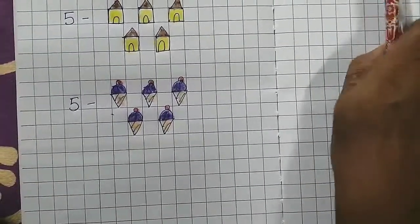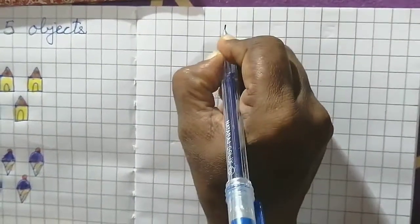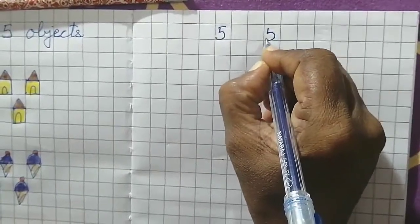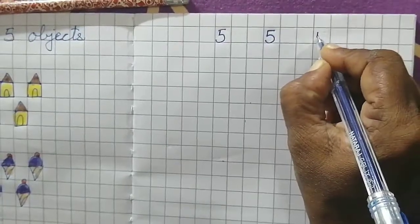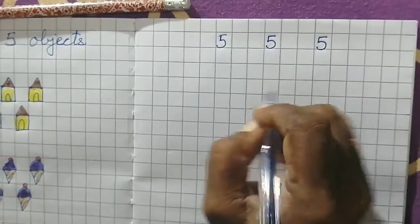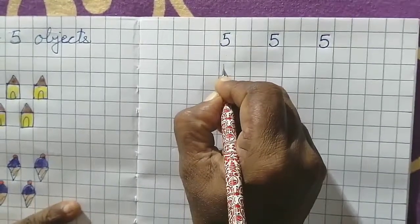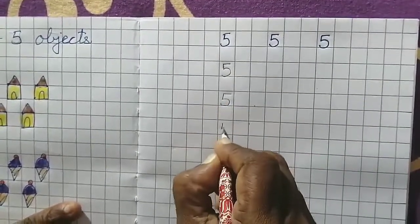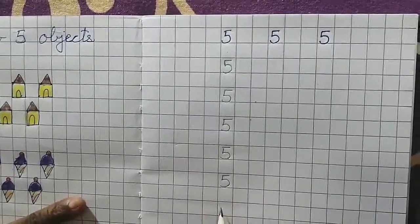Now let's start writing number 5. So children, when you write in the notebook, from the margin leave 2 squares and write number 5. How do we write 5? A small standing line, make a curve, touch the base, lift the pencil, and a small sleeping line. Leave 2 squares. Small standing line, a curve, touch the base, lift the pencil, and on top a small sleeping line — number 5. Then below, leave 1 square and write 5: small standing line, a curve, and a small sleeping line.